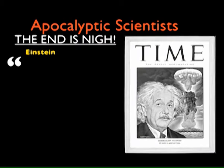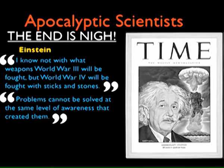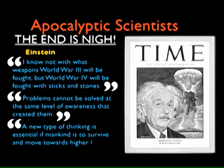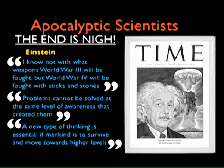Top scientists are still worrying about the end of the world. Einstein made these three observations: 'I know not with what weapons World War 3 will be fought, but World War 4 will be fought with sticks and stones.' 'Problems cannot be solved at the same level of awareness that created them.' 'A new type of thinking is essential if mankind is to survive and move towards higher levels.' The first is about the vulgar idea of apocalypse; the second is about scientific progress — solutions coming from outside the world you know; the third is about geopolitics. Einstein was also apocalyptic in a more literal sense — he came up with E=mc², and without that we wouldn't have any nuclear weapons.